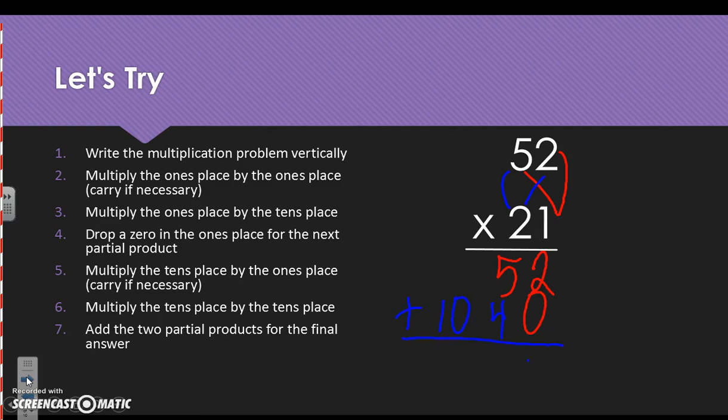We add these partial products. 2 and 0 is 2, 5 and 4 is 9. We bring down that 1 and our 0. So our final answer is 1,092 for this particular problem.